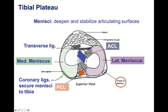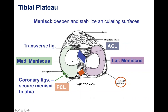The outer edges of both menisci are actually taller than the inner aspect, which almost creates a wall that keeps the femur in place on the tibia. So the meniscus also has a stabilization function for the knee joint. It's commonly injured — and when you get an ACL tear, you're also pretty likely to tear your medial meniscus; they often go hand in hand.